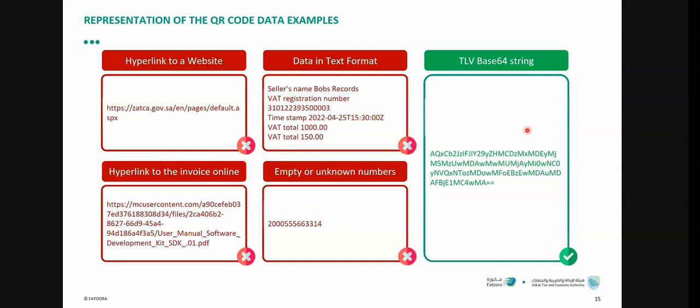However, to have a correct compliance representation of the QR code, it must be TLV-based 64 string. And we gave an example earlier in this workshop, and it should look like a string similar to what we have in the screen. A set of characters and numbers and equal signs.